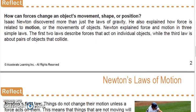How can forces change an object's movement, shape, or position? Isaac Newton discovered more than just the laws of gravity. He also explained how force is related to motion, or the movement of objects. Newton explained force and motion in three simple laws. The first two laws describe forces that act upon individual objects, while the third law is about pairs of objects that collide.